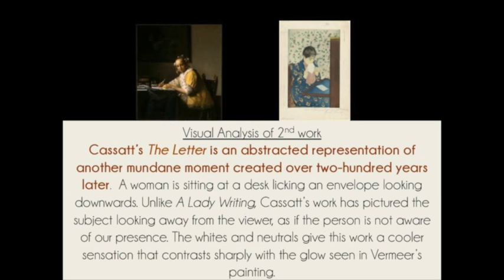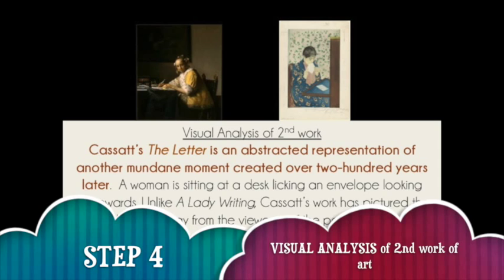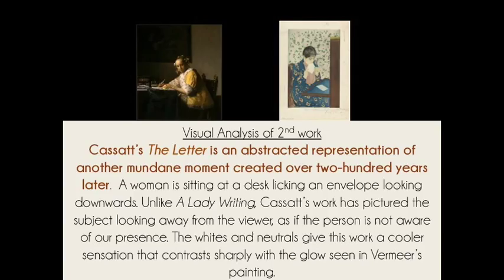Step four is your visual analysis of the second work of art. It's important to remember to have a bridge between your discussion of the first work and now moving to the second work. Here I've said Cassatt's The Letter is an abstracted representation of another mundane moment created over 200 years later. Then you go on to talk about the differences and the similarities — that's really what you're doing in step four.